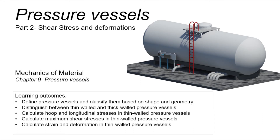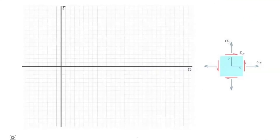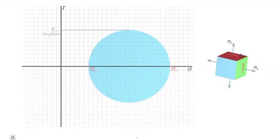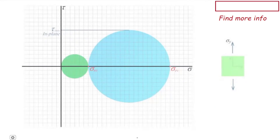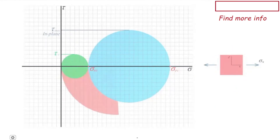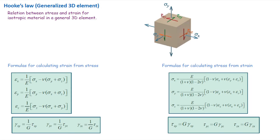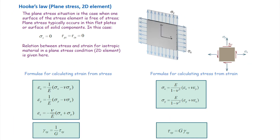Hey guys, what's up? This is the second video on pressure vessels. If you haven't watched the first one, I would recommend you watch that one first. You can find the link down below and then continue watching this video. Also, you need to recall the concept of Mohr's circle and the fact that the maximum shear stress can be determined by measuring the radius of the Mohr's circle. In addition, we will be using the concept of generalized Hooke's law in order to find the relationship between stresses and strains. If you are rusty on any of these topics, I will put links here so you can brush up on those topics.